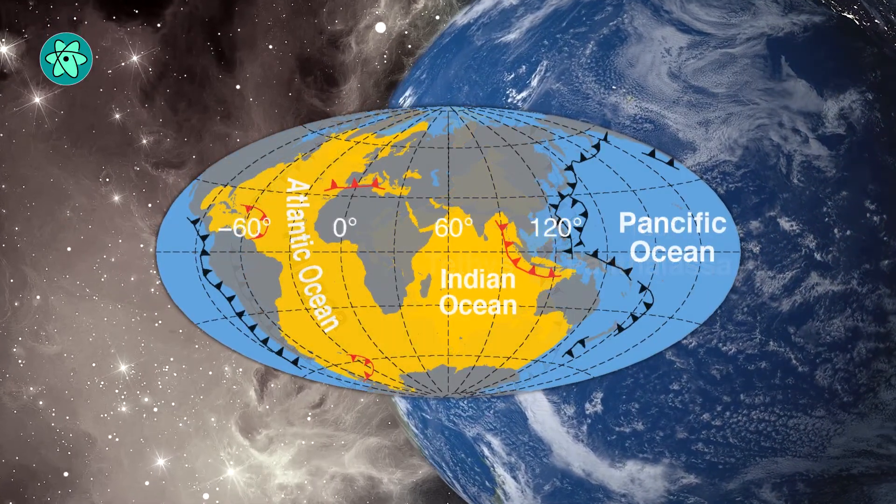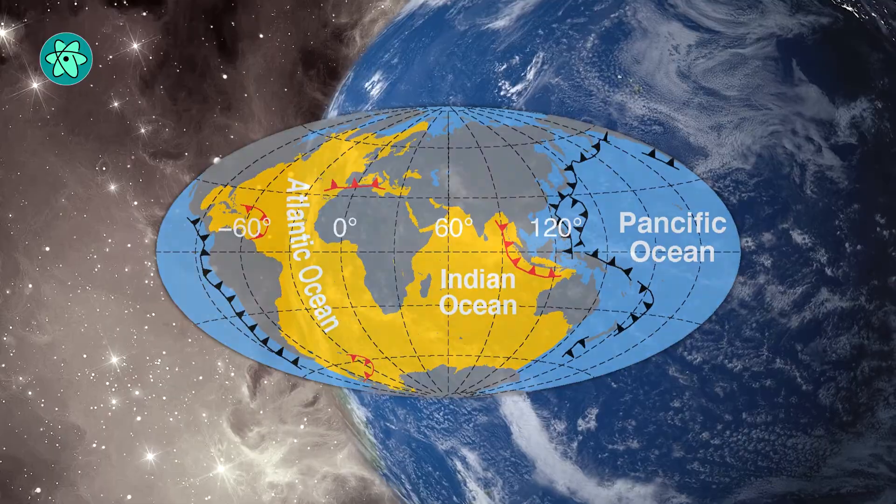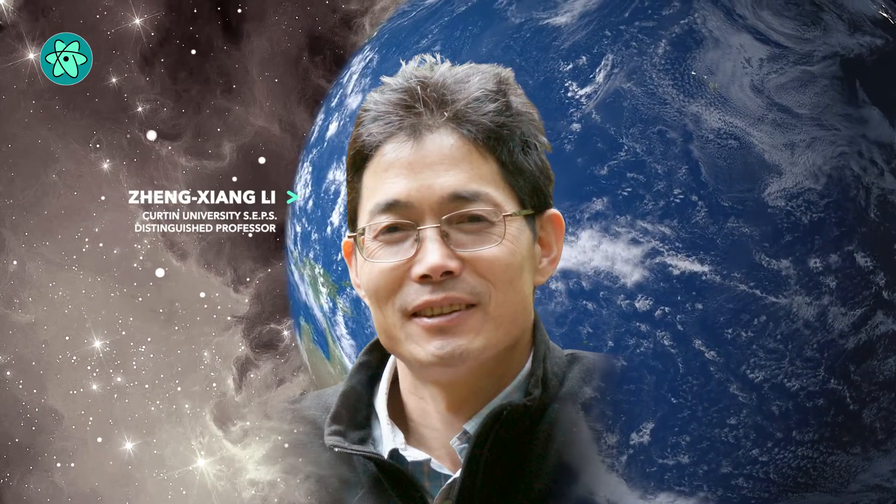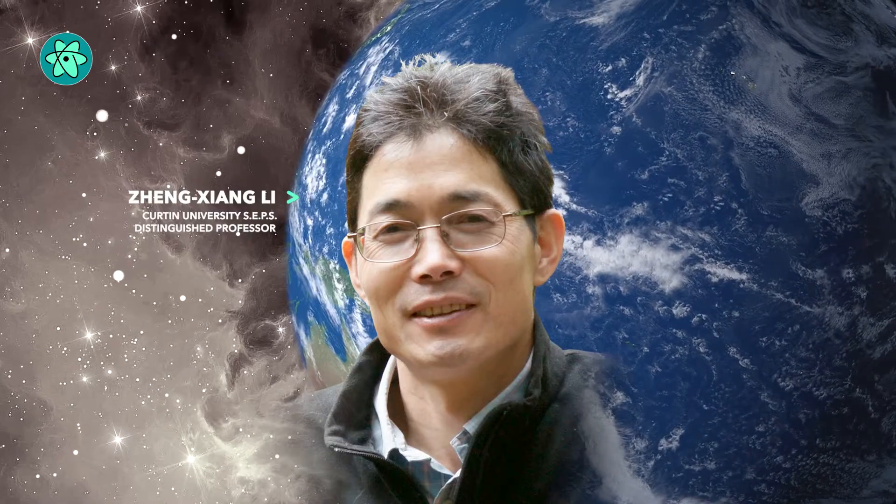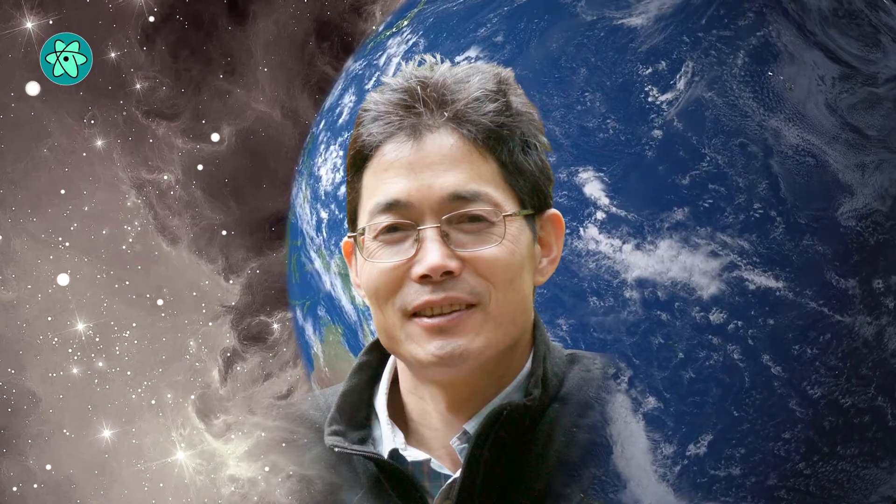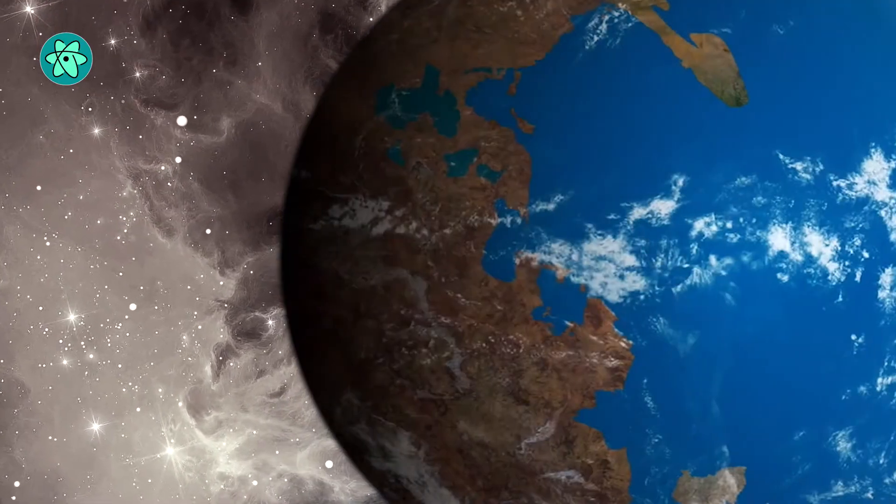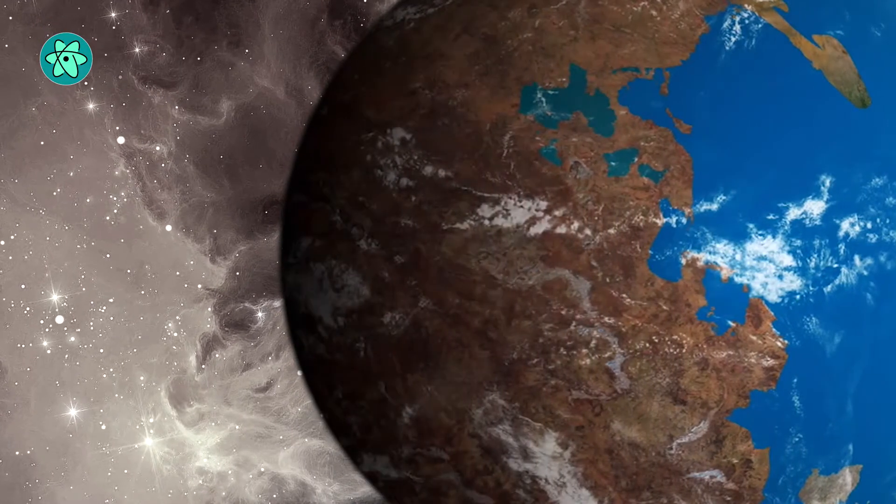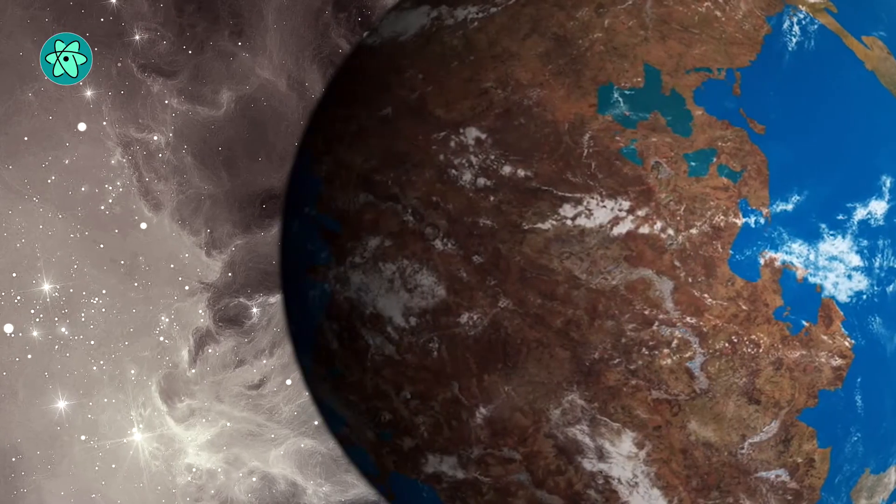and it started shrinking from its maximum size during the dinosaur era. Curtin's distinguished professor and co-author Zheng-Xiang Li, also from Curtin's School of Earth and Planetary Sciences, said that having the whole world dominated by a single continental mass would dramatically alter Earth's ecosystem and environment.